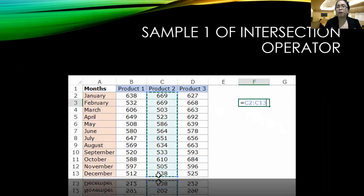There's a column for months. Column A shows January, February, March, April, May, June, July, August, September, October, November, and December. While column B for product 1 shows 638, 532, 606, and so on. Column C is for product 2. Column B is for product 3.